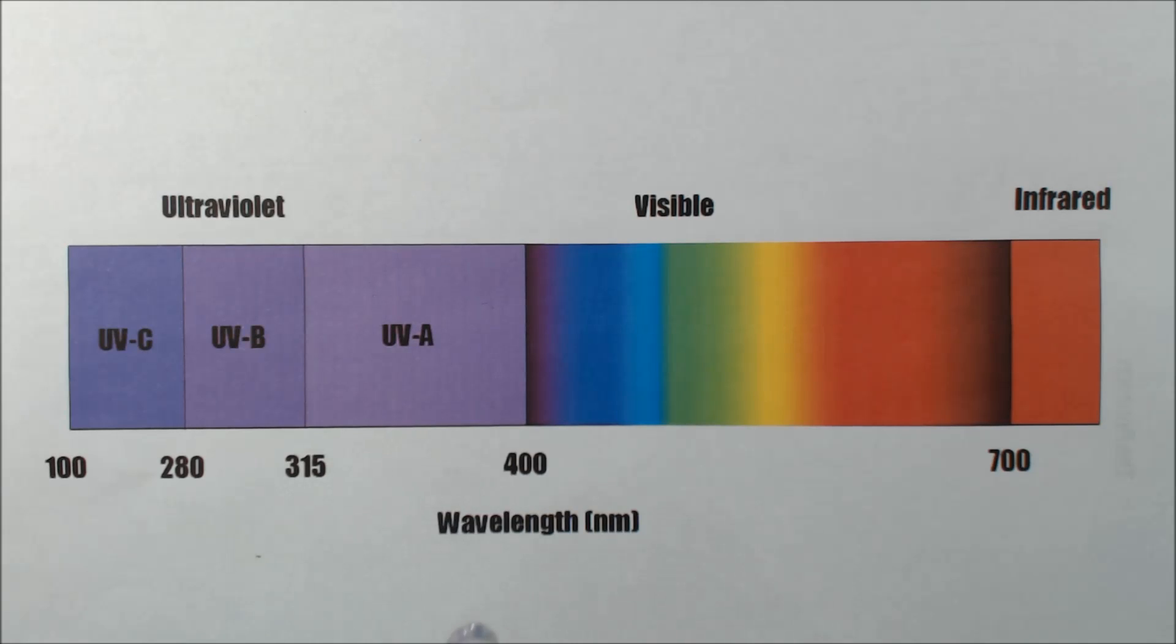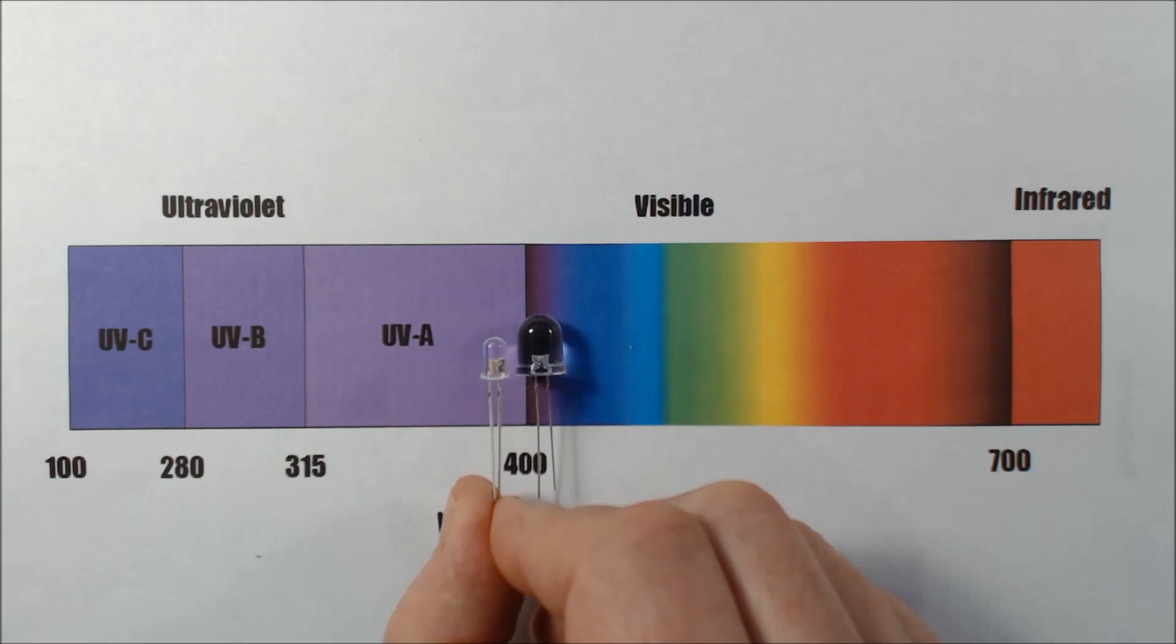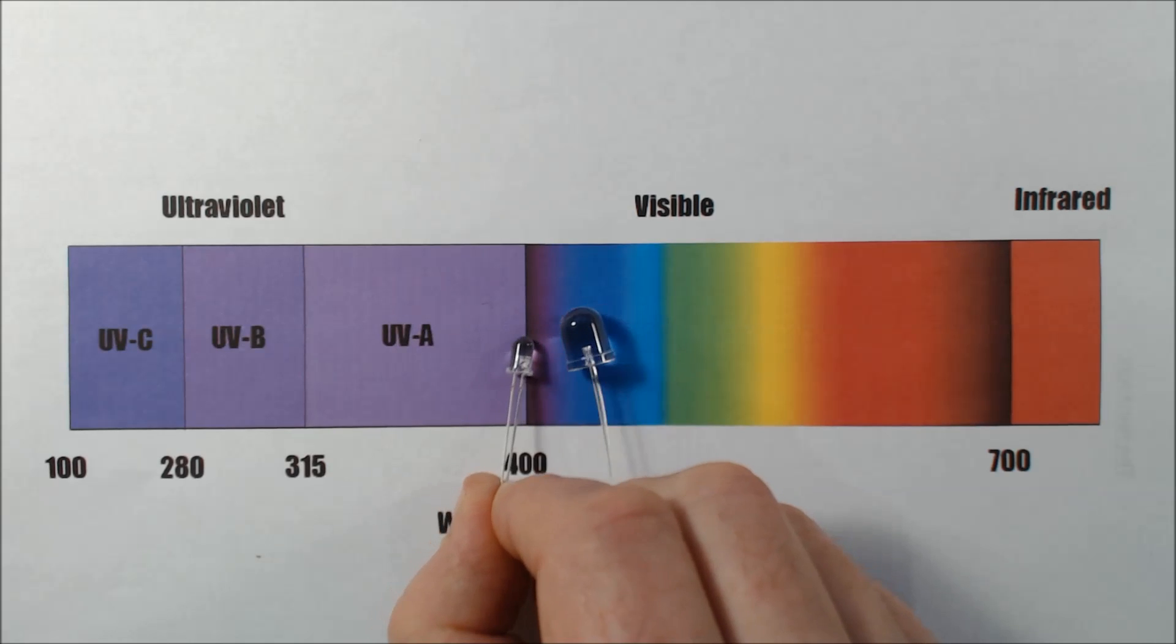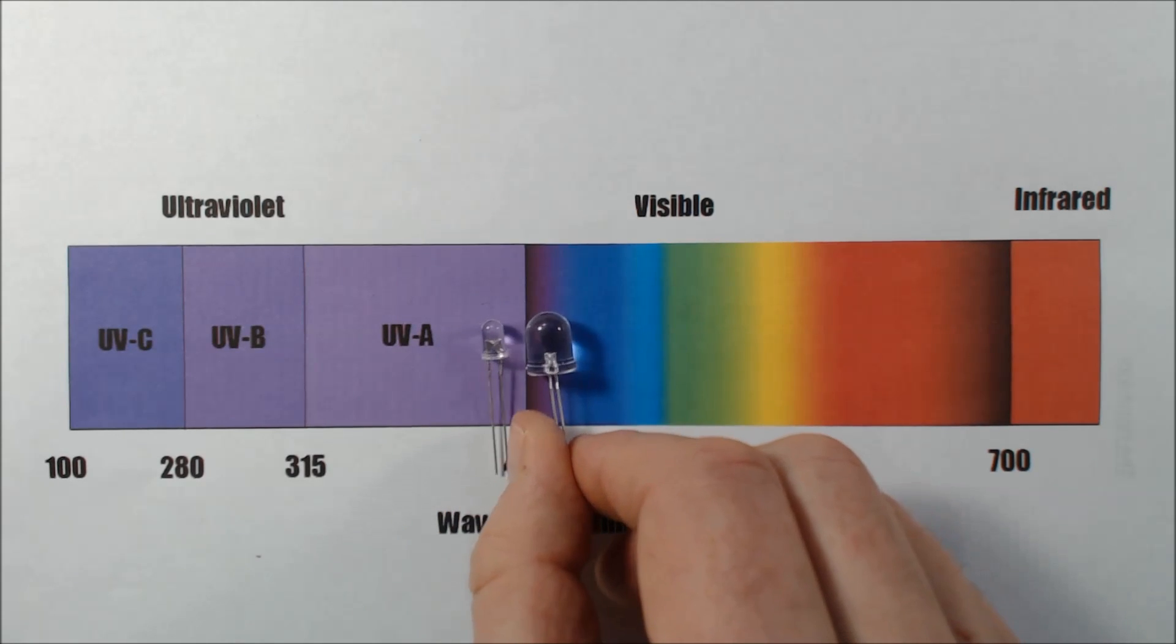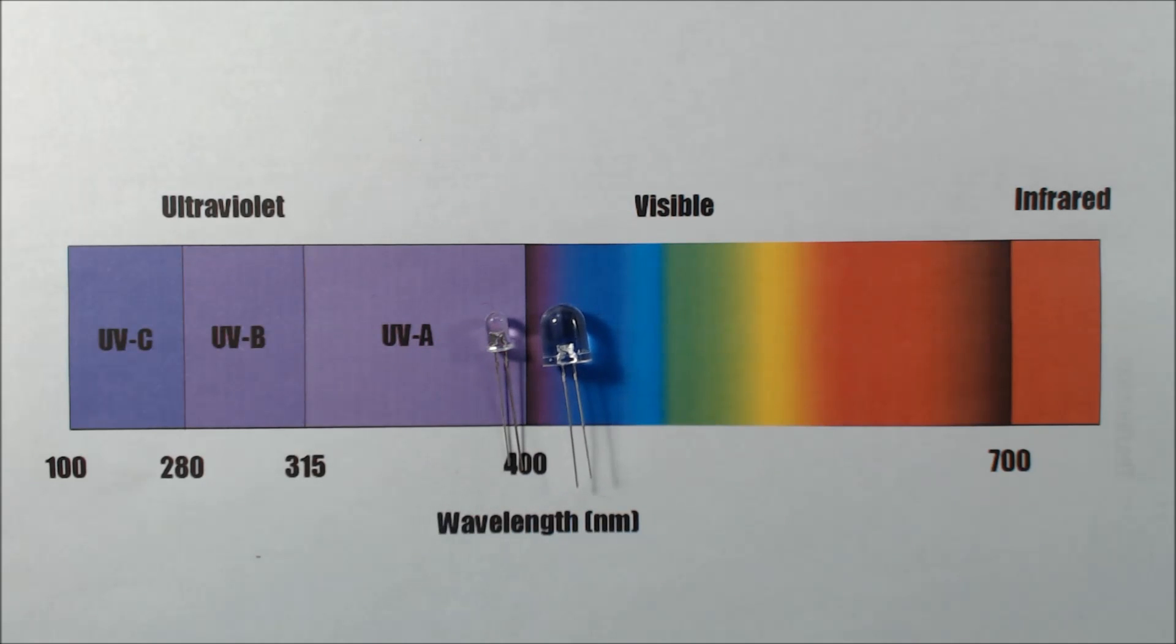The first set of LEDs that I purchased from the Amazon reseller are 400 to 405 nanometers so they're just about there on the border between the ultraviolet and visible light spectrum. The second set of LEDs from the eBay reseller are 390 to 395 nanometers so they're just a little bit under the border between the ultraviolet and visible light spectrum. So it'll be interesting to see what difference that makes.